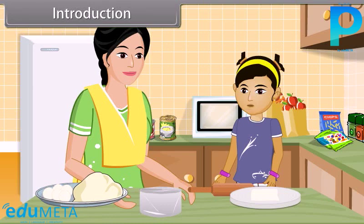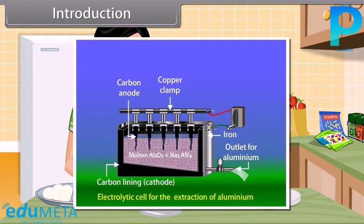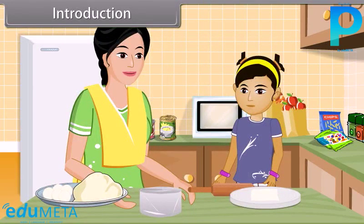Ria asks: 'But how does aluminium transform into thin foil shape?' Her mother says she will explain. Aluminium is the most abundant metal in the earth's crust, extracted from bauxite ore found in nature. The metal is then isolated and refined through various processes, after which it is moulded into desired shapes. Ria then says she wants to know more, and the lesson begins: today we will study about the general principles and processes of isolation of elements.